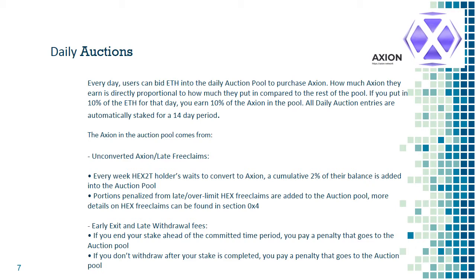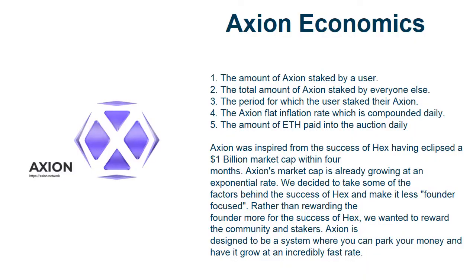If you bid 10% of the ETH on that day, you get 10% of the pool rewards. 80% of the ETH paid in the auction is then used to hyperdrive both the AXN token and stakers' earnings. First, the ETH is used to purchase the tokens, boosting the token price, and then those tokens are distributed to stakers, creating a very strong positive feedback loop.